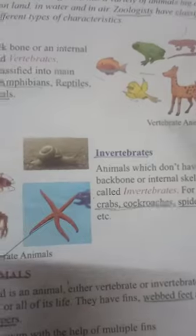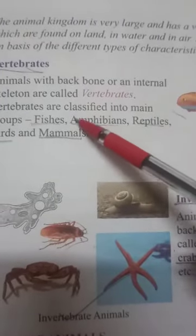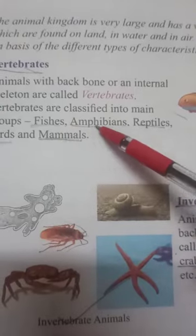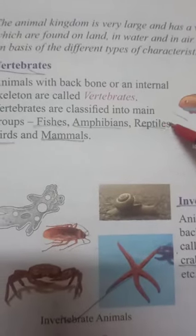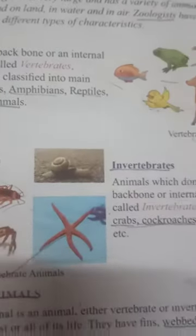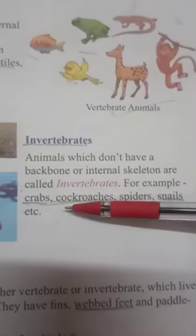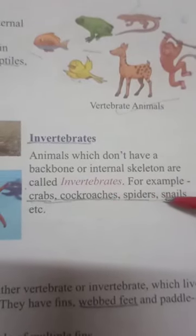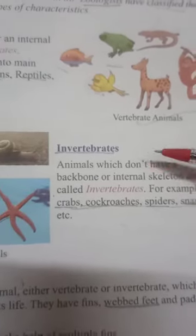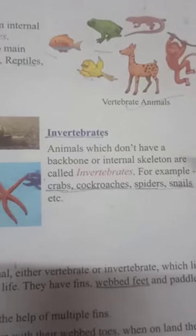Under vertebrates we can place fishes, amphibians, reptiles, birds and all mammals. Under invertebrates, crabs, cockroaches, spiders, and snails are coming under invertebrates.